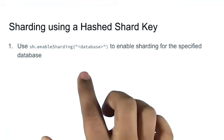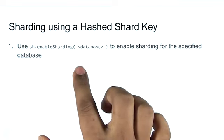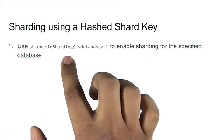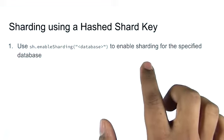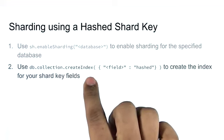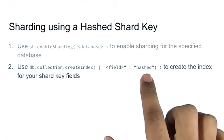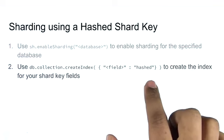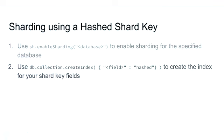To create a hashed shard key, you're going to start by enabling sharding on the database using sh.enableSharding. Remember, this does not automatically shard your collections. You're still going to create an index, but now you're going to specify that it is a hashed index instead of specifying -1 or 1 as the value of the indexed field. Finally, you're going to use sh.shardCollection, still specifying the database and collection, but you're going to specify hashed for the shard key value.